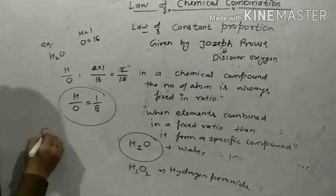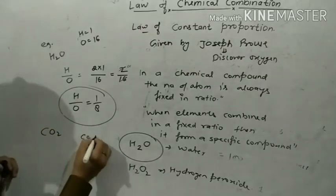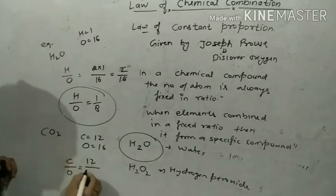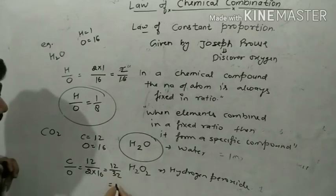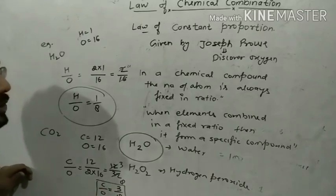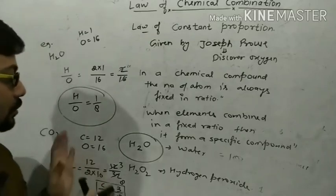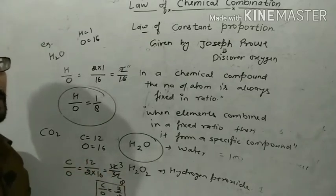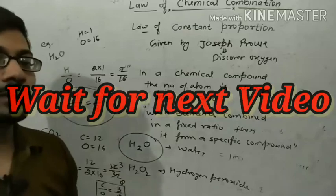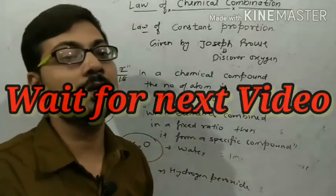In the case of carbon dioxide, carbon has atomic mass 12 and oxygen is 16. So the ratio of carbon to oxygen in CO₂ is 12 : 32, which simplifies to 3:8. The ratio of carbon to oxygen in carbon dioxide is always 3:8 — it can never change. This is the constant proportion. Thank you for watching this video. Please like and share it, and wait for my next video.